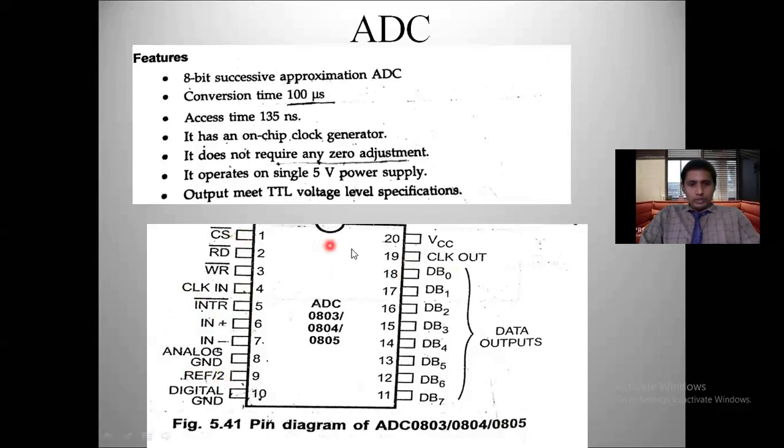IN+ and IN− are the two analog input pins; IN+ is connected to the reference analog voltage and IN− is connected to ground. In some applications where reference voltage needs to be half the value, the reference-by-two pin is connected to the reference voltage. Like that we can analyze the pin description of ADC and its features. In the coming video I will give a brief idea about how ADC interfaces with 8086 with and without 8255. Please share this video with your friends and subscribe to my channel.